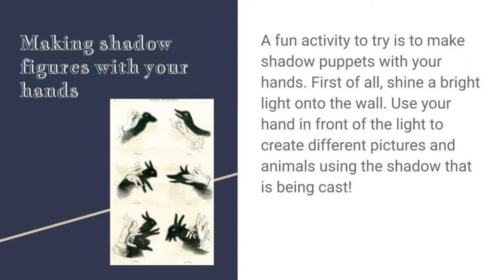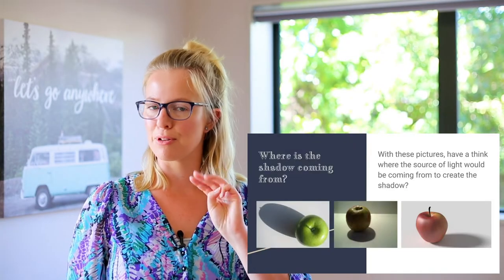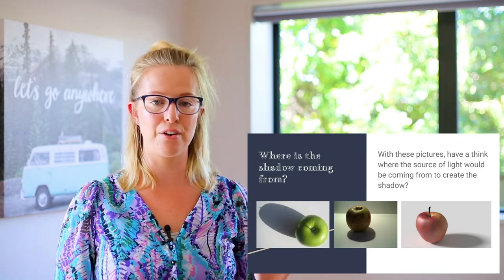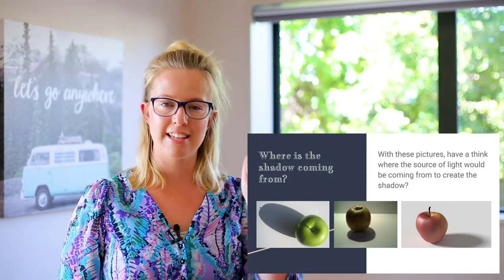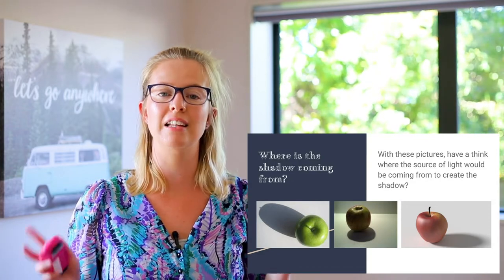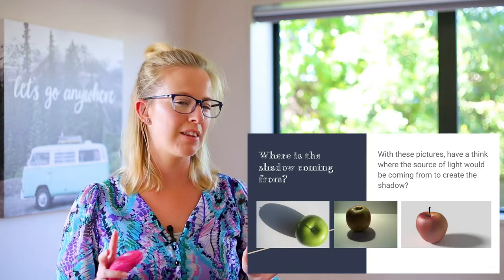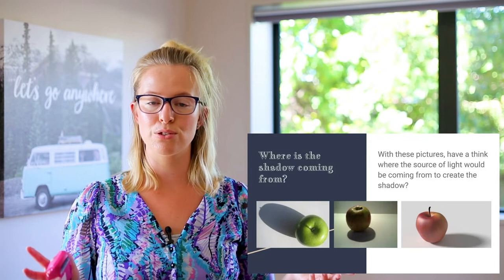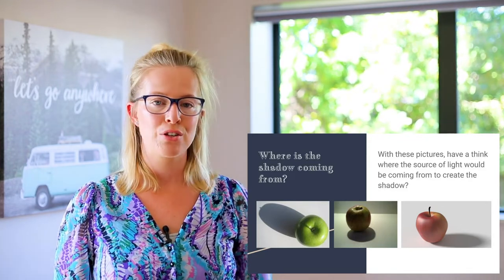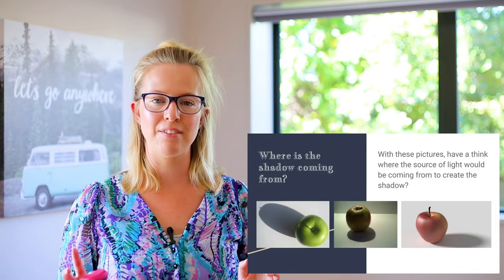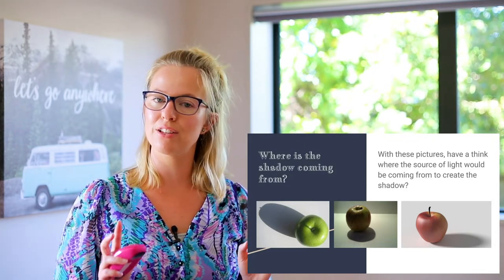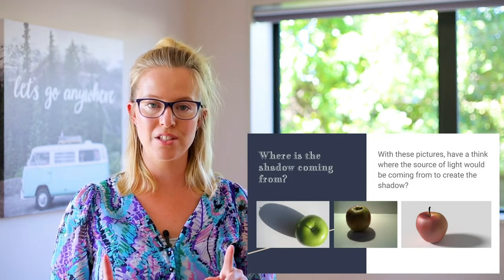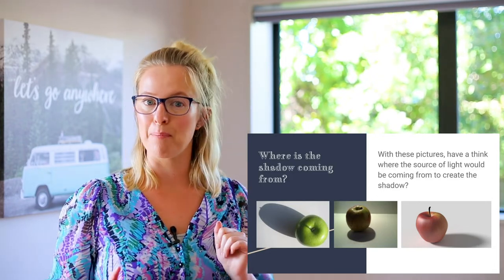Now we've got three different images of three different apples with three different shadows. Our mini activity here is to have a think about where we think the light source is coming from. These apples are probably inside, so the light source might be a lamp or a light indoors. You can pause the video and have a think about where you think the light source is for the first, second, and third picture.